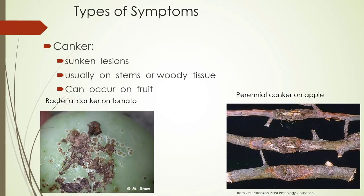Cankers are sunken lesions, usually on stems or woody tissues, though they can occur on fruit. Here we've got bacterial canker on tomato, and then perennial canker on apple stems, which is a fungal disease.